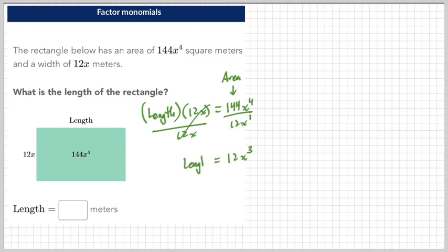So you go four minus one, and then you get three. So your length is 12x³. That's your answer.